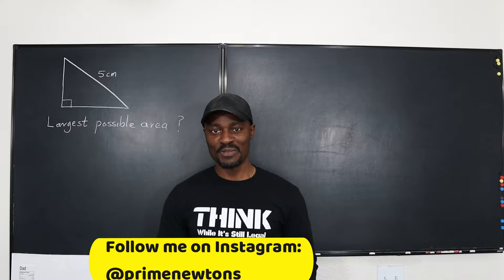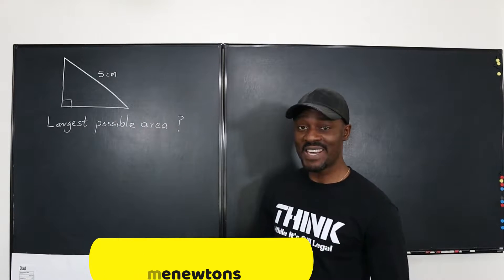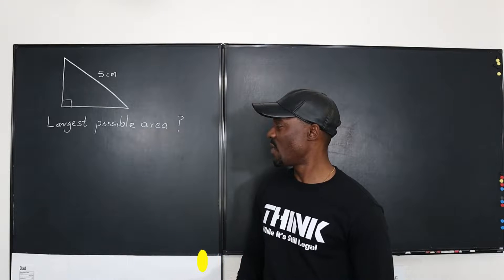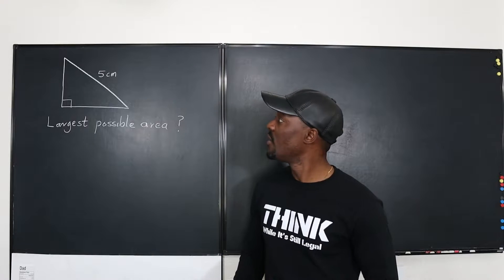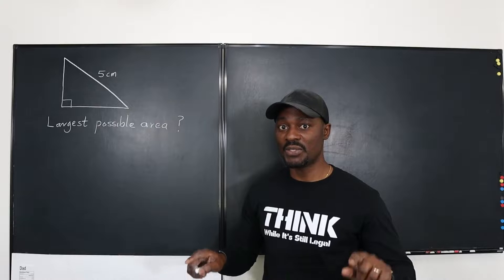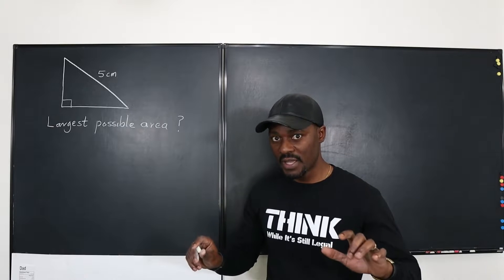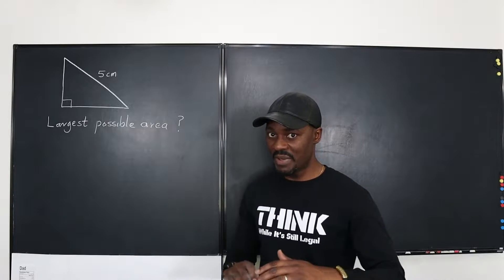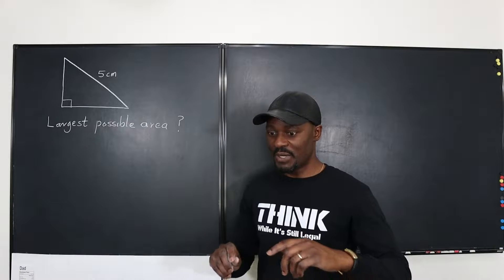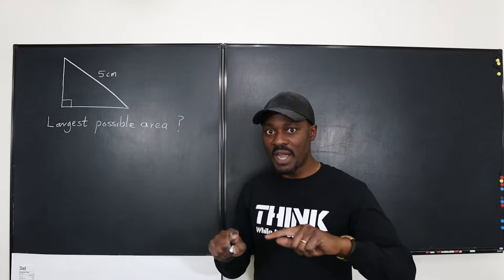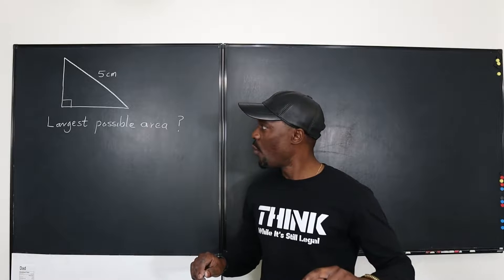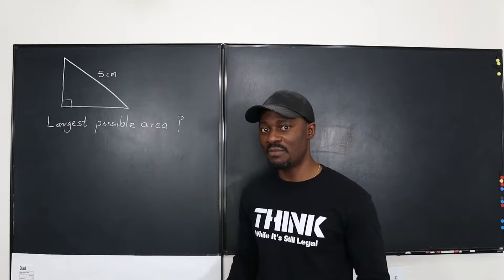Hello and welcome to another video. This is another optimization problem: what is the largest possible area of a right triangle if the hypotenuse is 5? You're free to change the height and the base, but at every point you must always have a hypotenuse that's 5 centimeters long. What would be the largest possible area you can make?